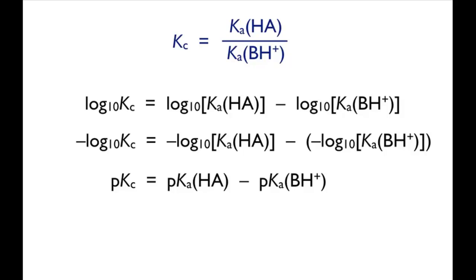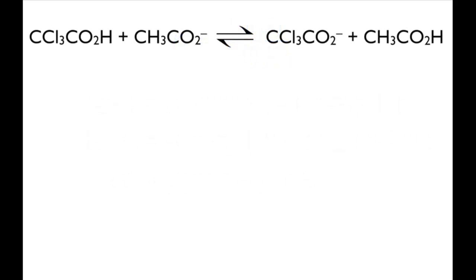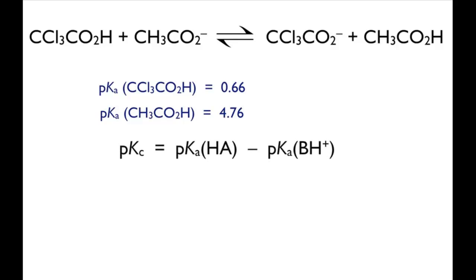Let's look at an example of this. The equation here shows the equilibrium involving trichloroethanoic acid and ethanoic acid. Using the pKa values of the two acids, we can predict a value for the equilibrium constant.